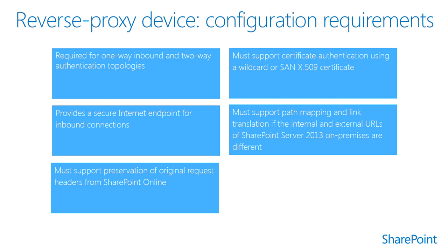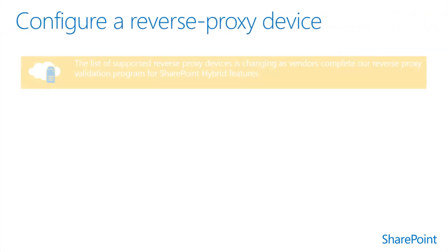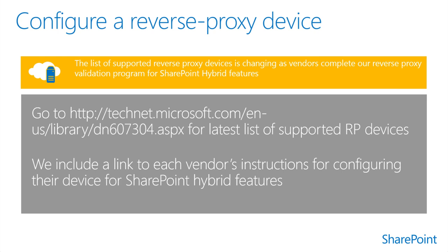The reverse proxy device in a hybrid topology provides a secure endpoint for inbound traffic using SSL encryption and client certificate authentication. In a hybrid SharePoint 2013 scenario, the reverse proxy must be able to support client authentication with a wildcard or SAN SSL certificate, support pass-through authentication for OAuth 2.0, including unlimited OAuth bearer token transactions, and accept unsolicited inbound traffic on TCP port 443. No ports other than TCP 443 need to be opened on the external reverse proxy endpoint to support hybrid connectivity. Hybrid SharePoint environments support a number of reverse proxy devices. The basic steps include configuring ADFS, importing an SSL certificate, and configuring the published application.